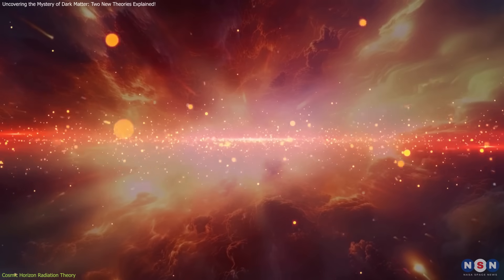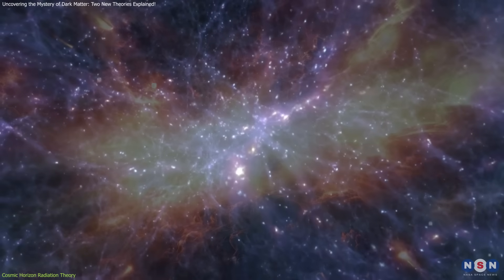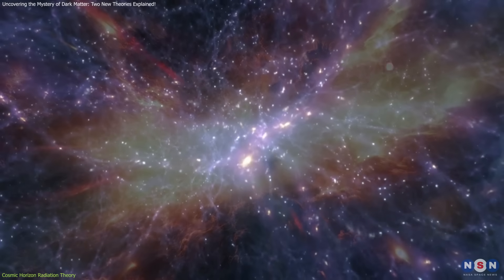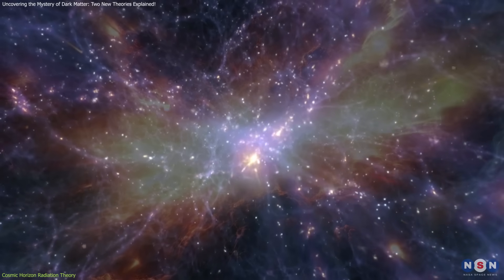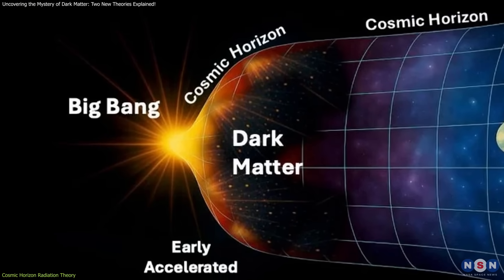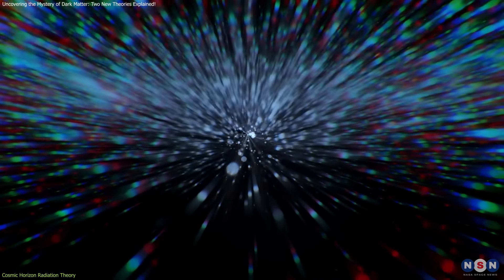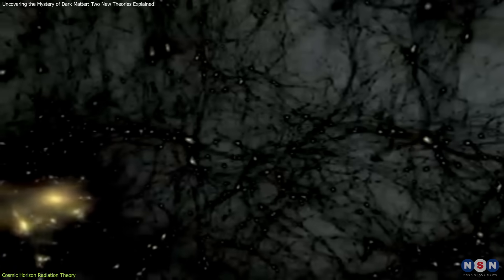These particles would have been created gravitationally, not through any direct interaction with ordinary matter. Essentially, the universe's expansion, through quantum radiation near the cosmic horizon, could have led to the formation of stable, gravitationally bound particles, which we observe today as dark matter.